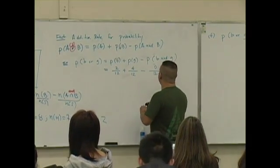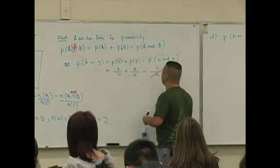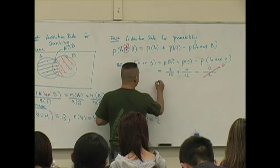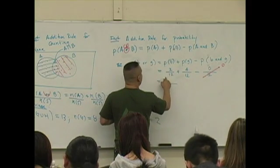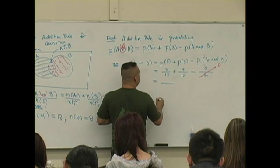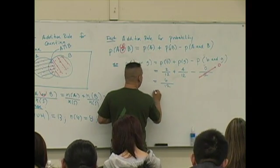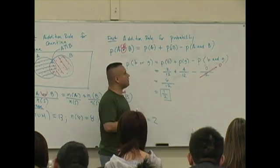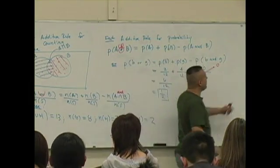So two over twelve plus four over twelve, what does that give you? Six over twelve, which is one half. Wasn't that the same answer we got this morning using this definition?